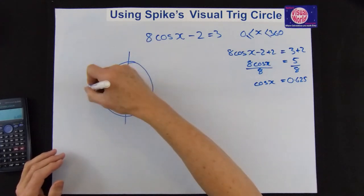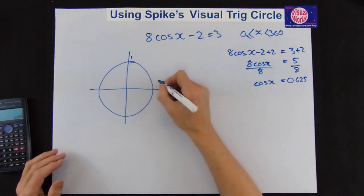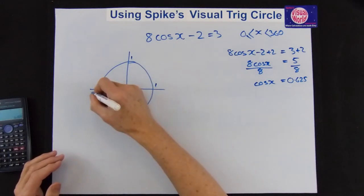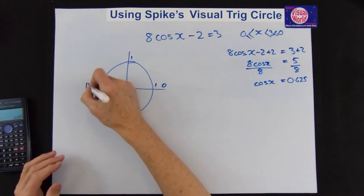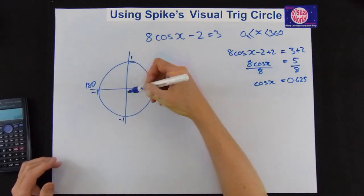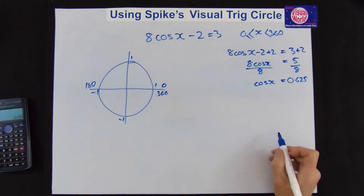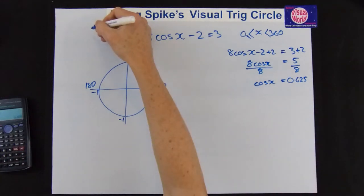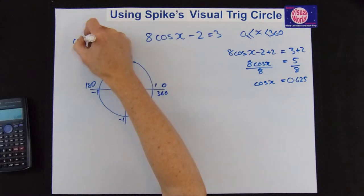We've got 1, 1, minus 1, minus 1, 0 through to 180, and back to 360. These are the only ones you put in. If you put the other ones in, you can get confused. Now cos, sine is the height, cos is the length.